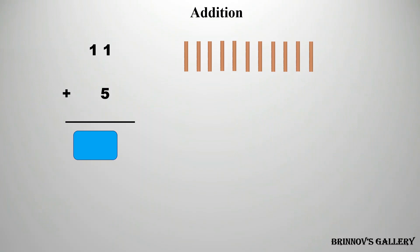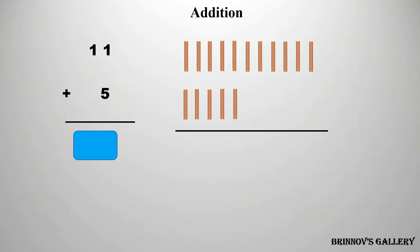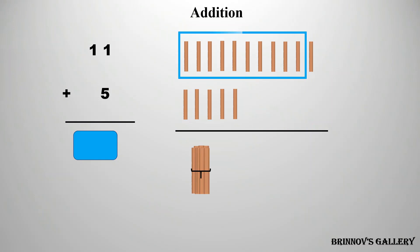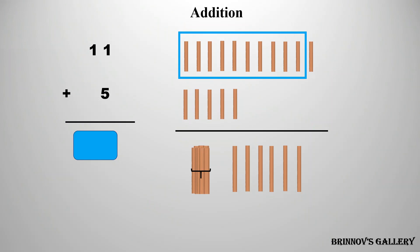11, 6, 7, 8, 9, 10. Let's make a group of 10 and remaining 1, 2, 3, 4, 5, 6 — 6 ones. We have one 10 and 6 ones. So, 11 plus 5 is equal to 16.